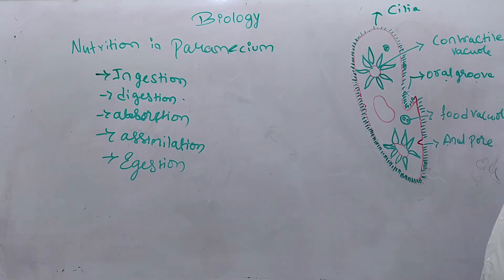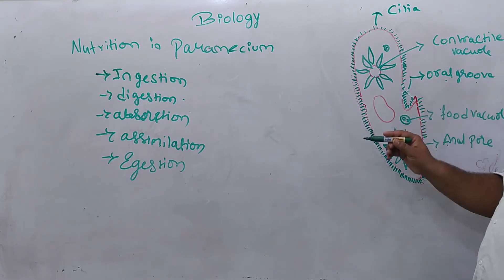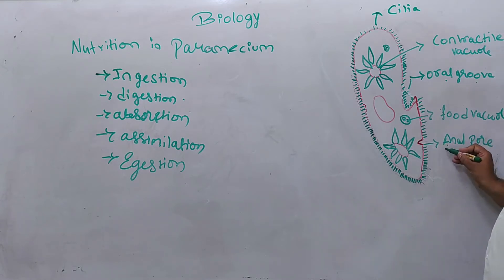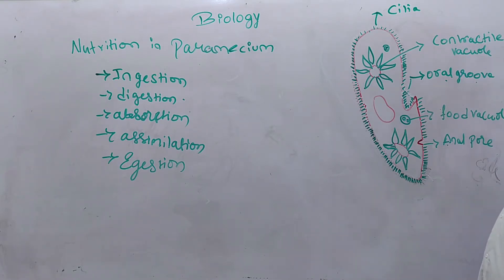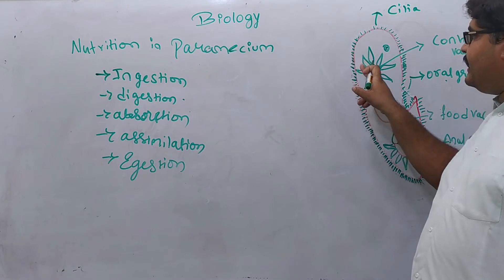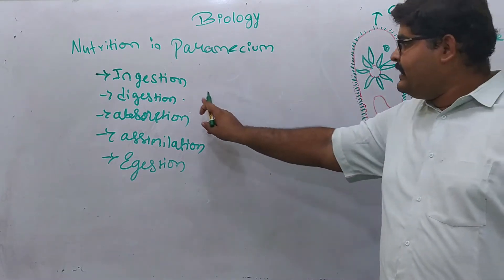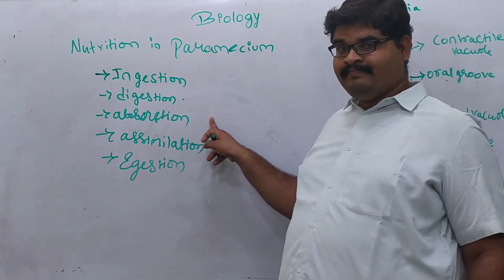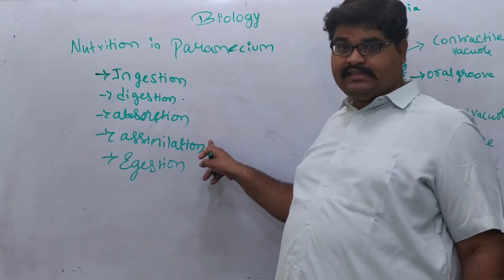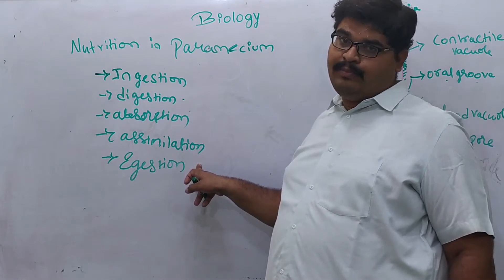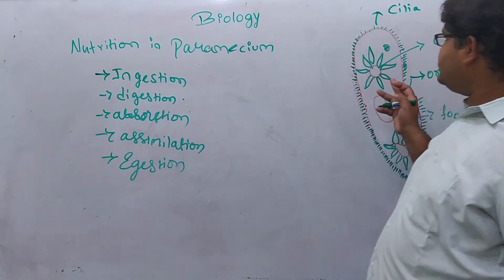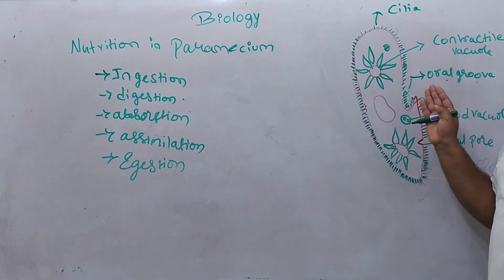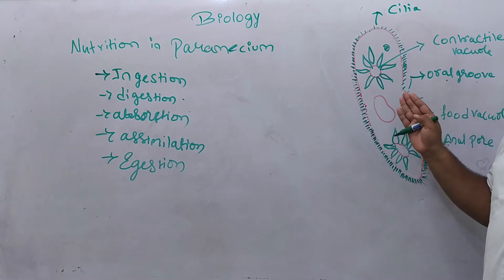After ingestion, digestion, absorption, and assimilation, the undigested food is eliminated. The Paramecium gets rid of all undigested food material with the help of the anal pore, through which undigested food material along with some other waste materials are thrown out of the body. This completes nutrition in Paramecium: ingestion through the oral groove via cilia, digestion in the food vacuole, absorption and assimilation, and egestion through the anal pore.